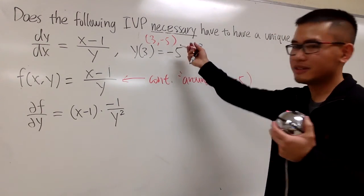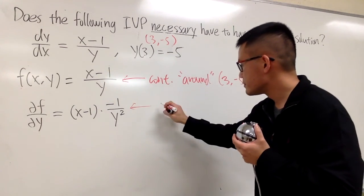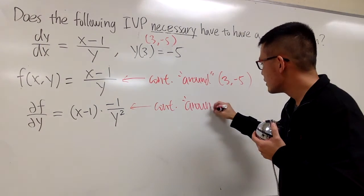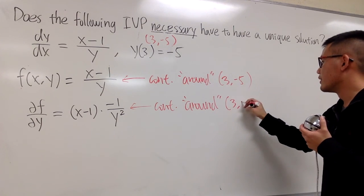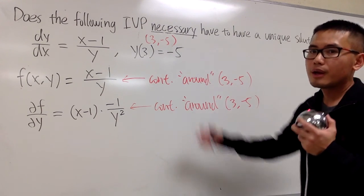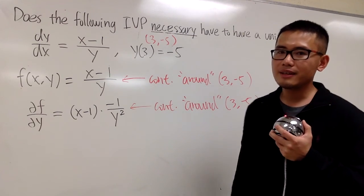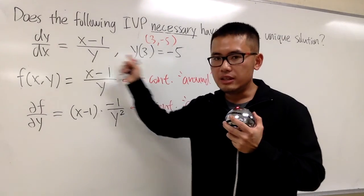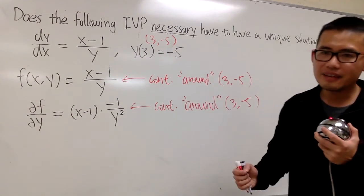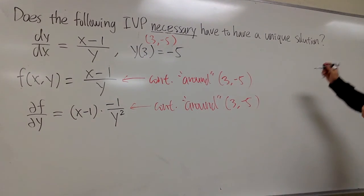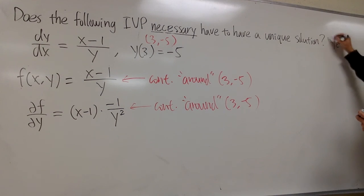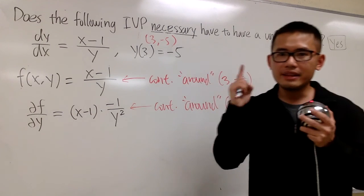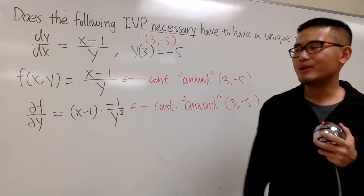So, it's continuous. The only bad guy that will make this discontinuous is y = 0. That's why I changed it to something that's not 0. But anyways, this right here, it's also continuous around the point 3 comma -5. So, you see, both criteria are satisfied. That means we can be sure this initial value problem has to have a unique solution. So, right here, I can put down yes. Now, we know this must have just one answer. One and only one.